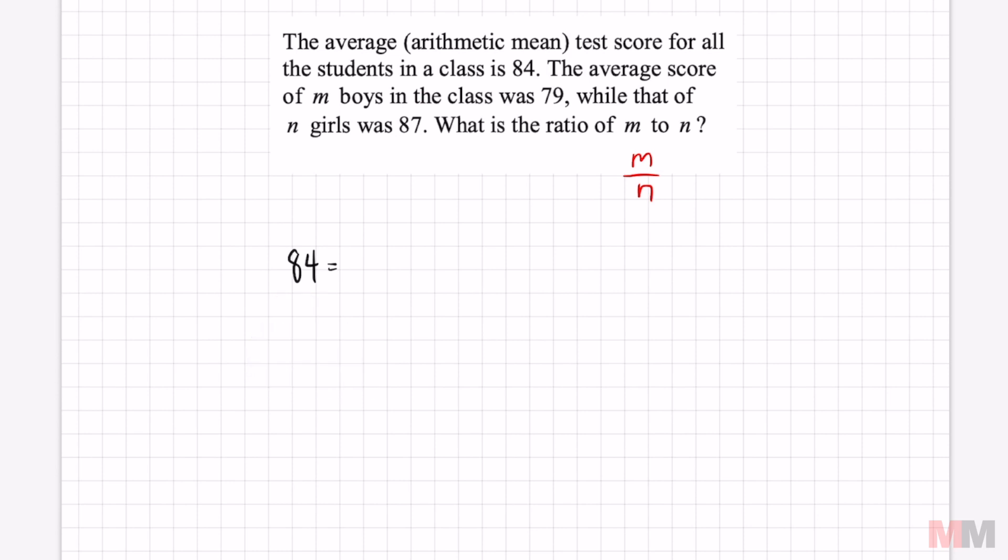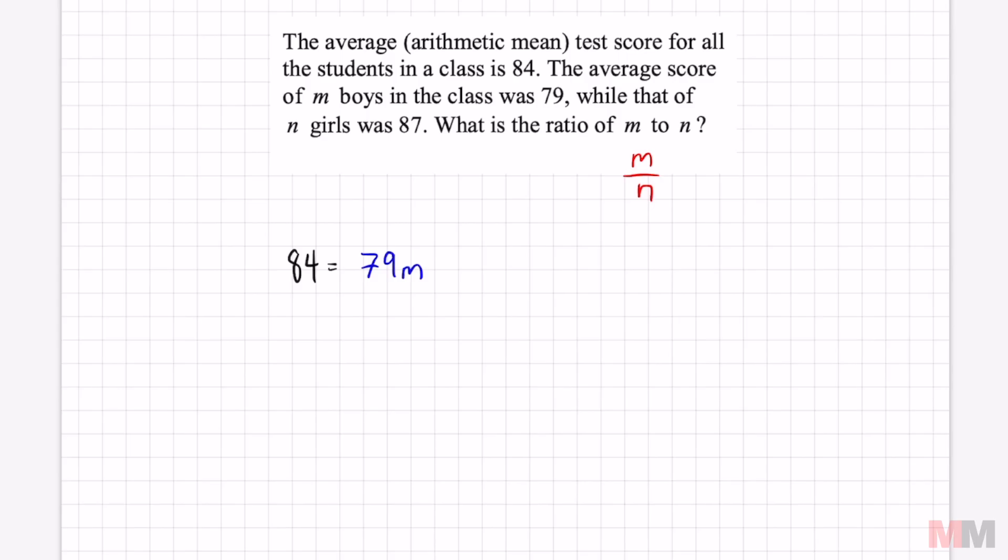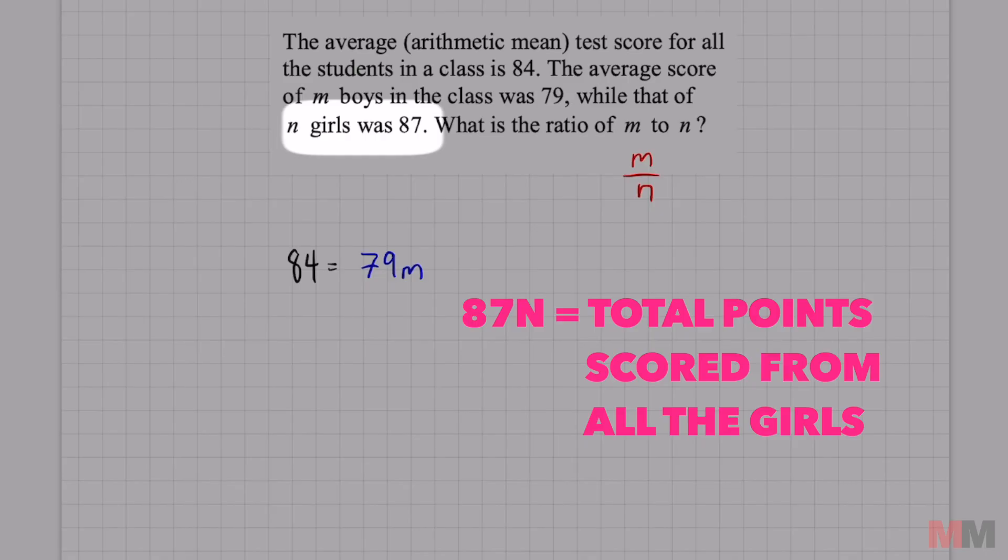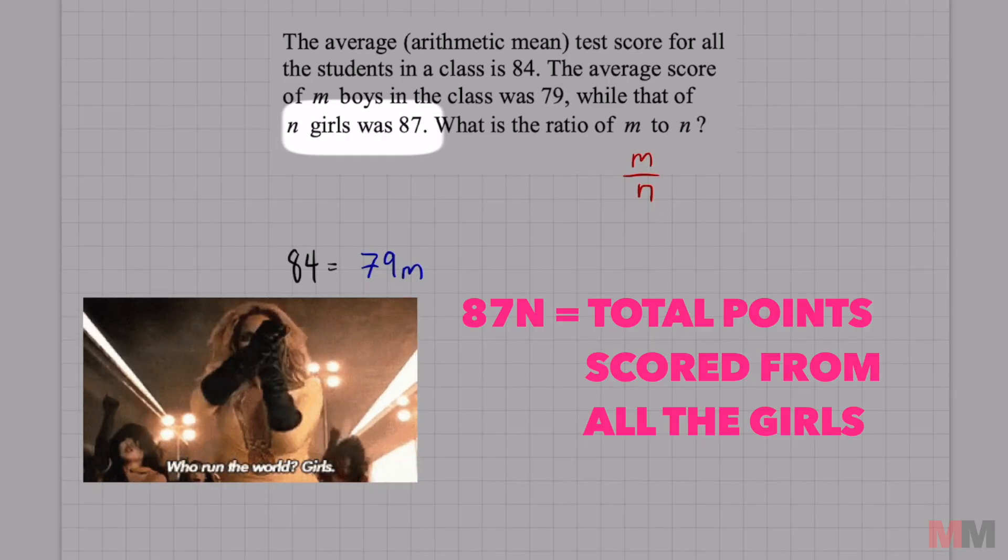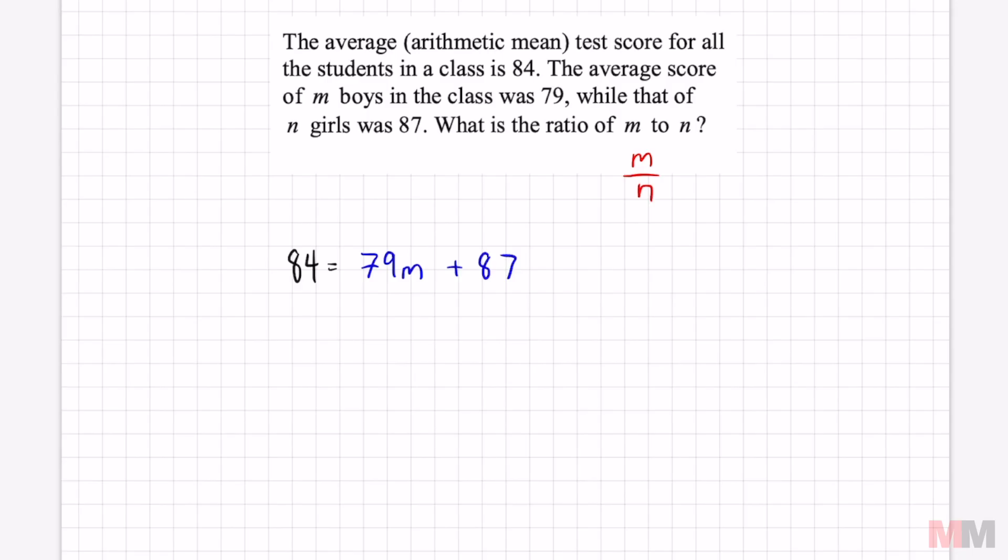It says the average score of m boys in the class was 79. That means every boy in the class scored about 79 points. We can write that expression as 79m, and we don't know how many boys there are. That's why I put m right there. And the girls average score, girls are owning the boys, was 87. So we can write that in a similar way, 87n.